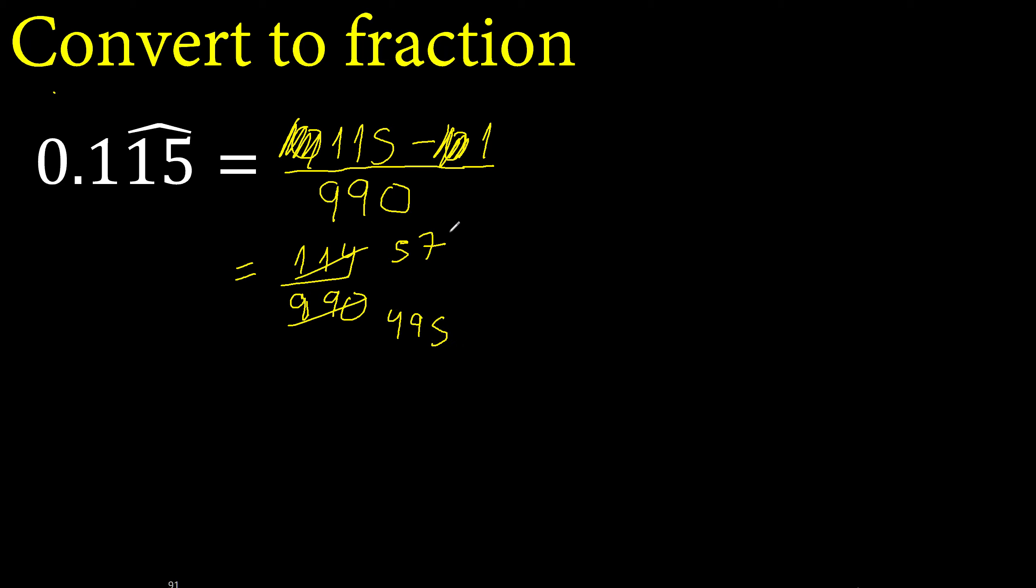Okay, can be divided by three. Divided by three is 19, divided by three is 165. Okay, cannot be simplified. Finish.